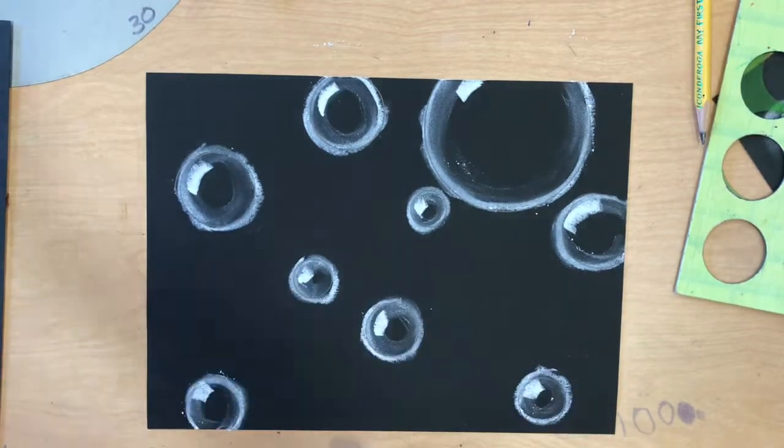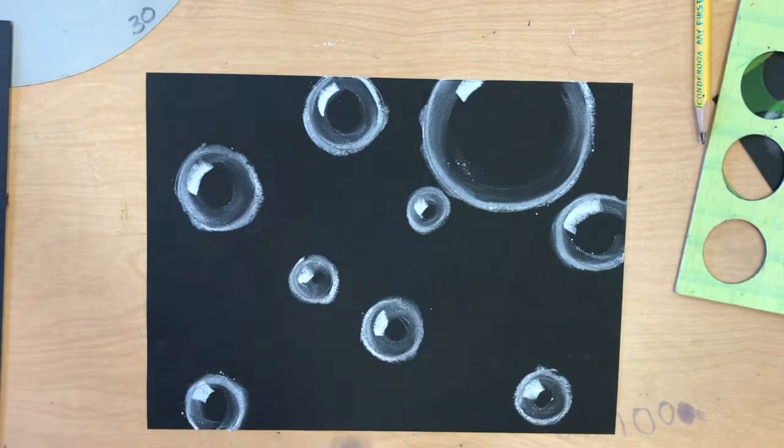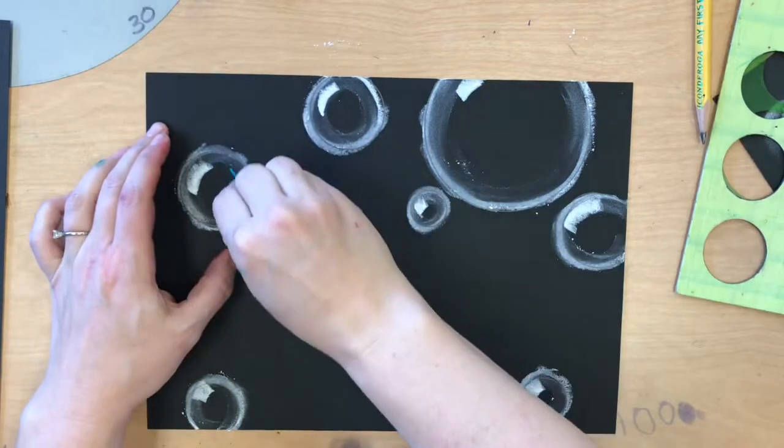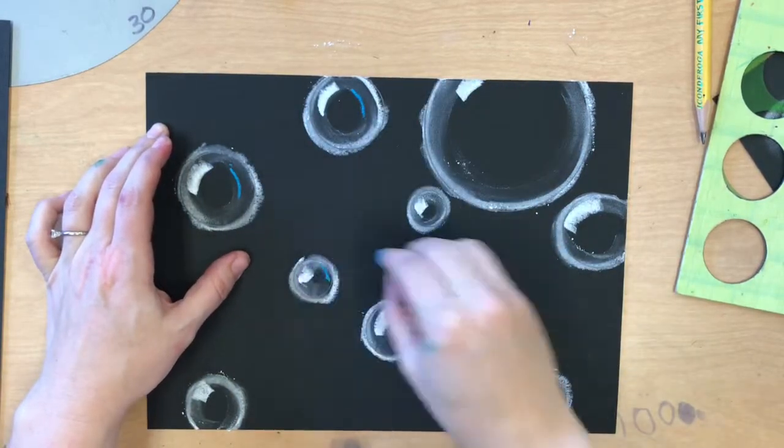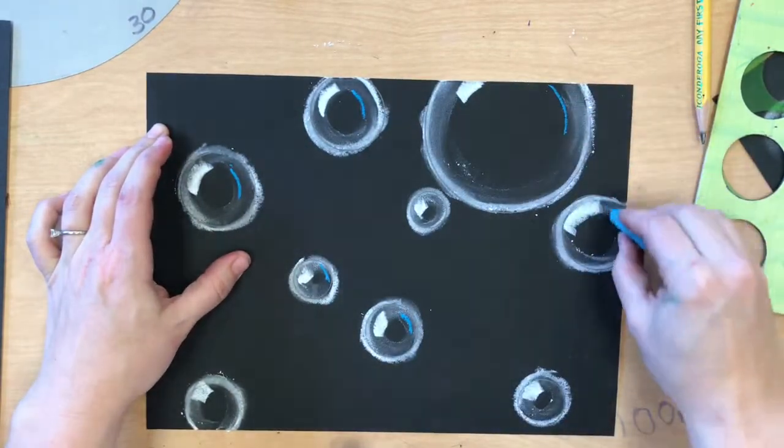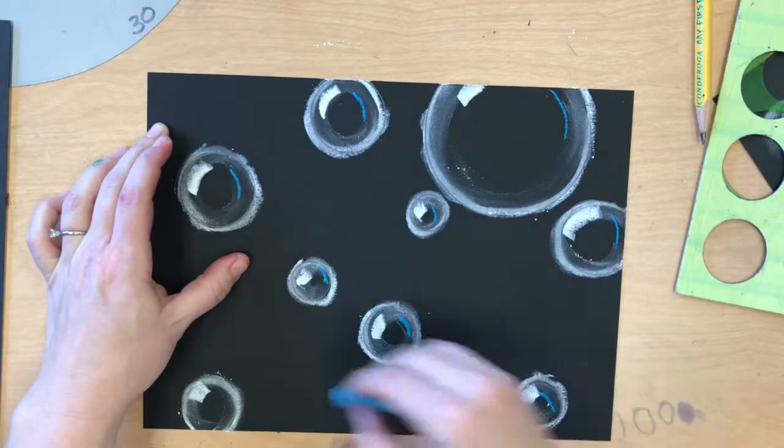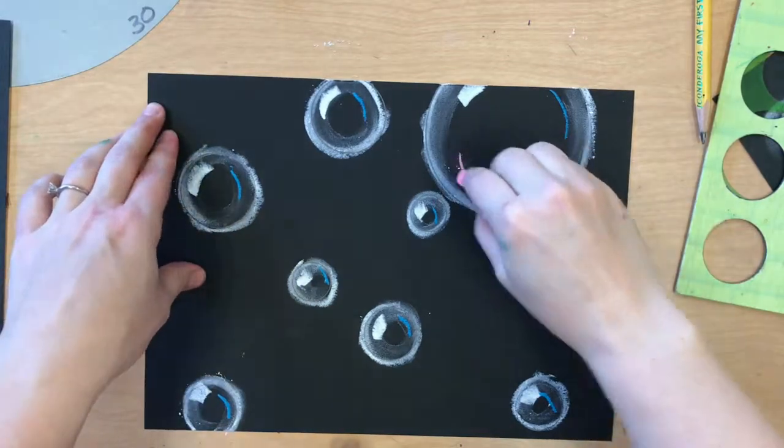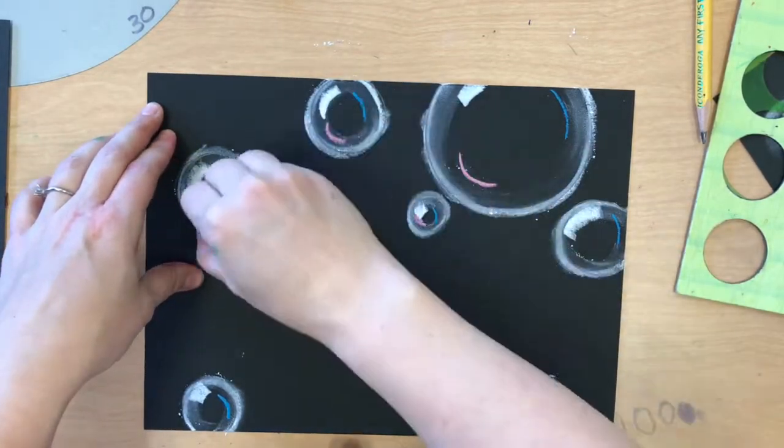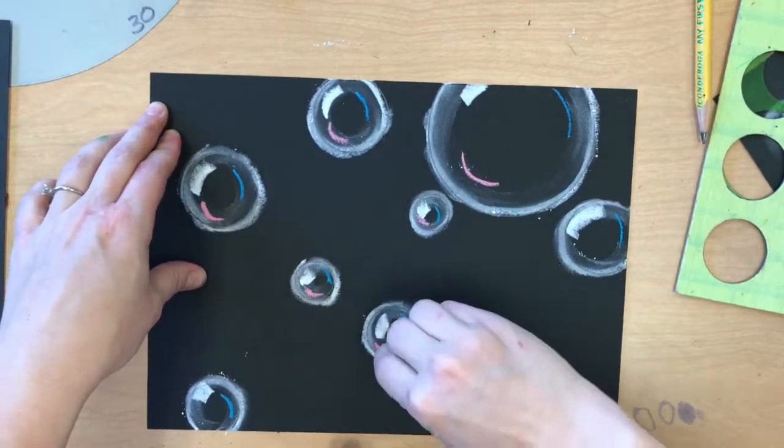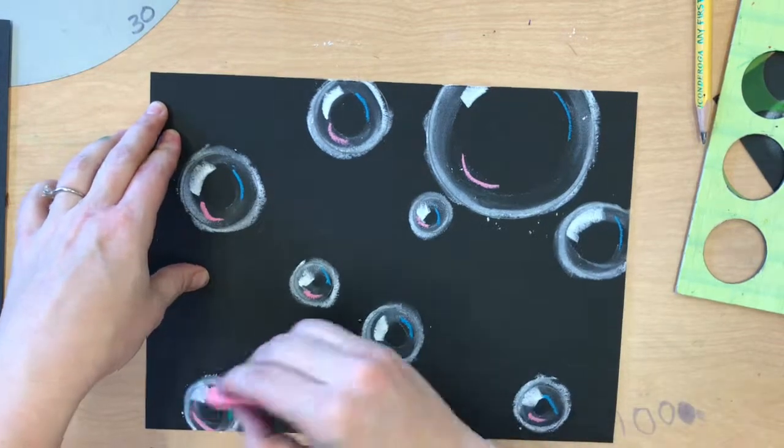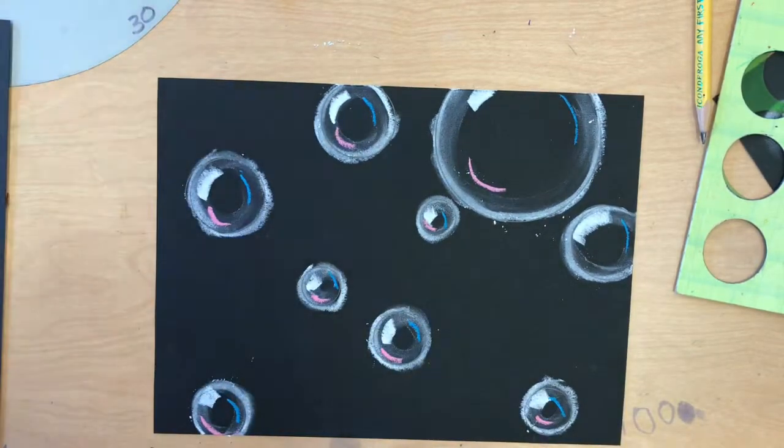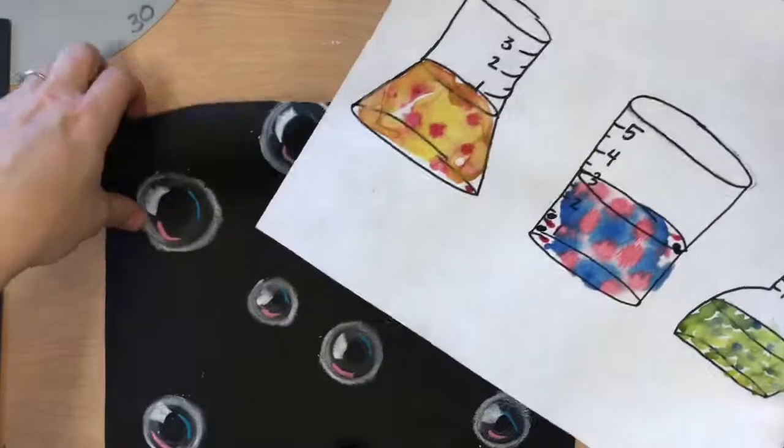And if you want to, because we've seen colors on bubbles before, you can choose a color to do another little curve inside your bubble. It will be in the same spot on each bubble. And then if you're really crazy, you might do a third color on each bubble in the same spot on that bubble. Now we have totally realistic looking bubbles.